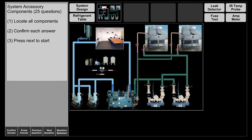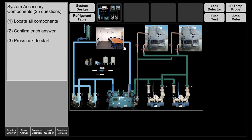In summary: chilled water comes out at 45 degrees, picks up heat, and returns to the chiller. Condenser water comes in at 75 degrees, picks up that heat, and dissipates it outside. Ultimately, this matches the very definition of refrigeration — taking heat from a place where it is not wanted and transferring it to a place where it is unobjectionable.